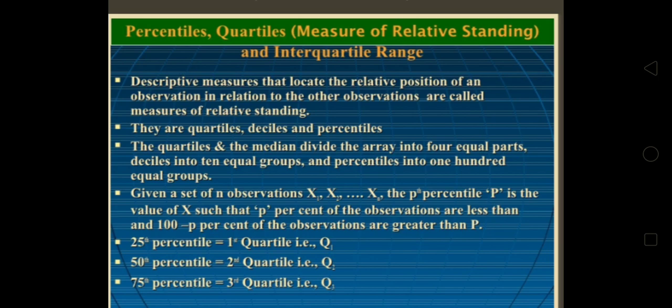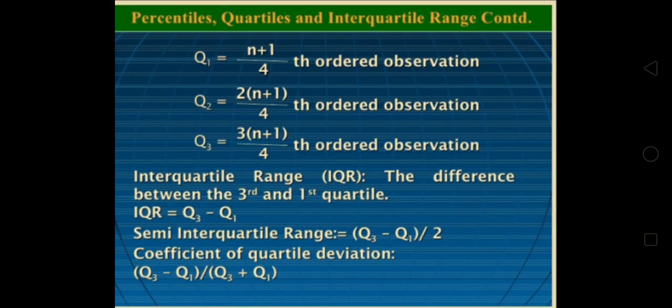But the formula is Q3 minus Q1 divided by 2. For getting Q1, formula is (n+1)/4 order observation. Q2 is 2(n+1)/4 order of observation. For Q3, multiply 3(n+1)/4. Shortly, if we are getting Q1, we multiply by 2, and for Q3 we multiply Q1 by 3.